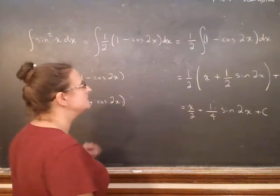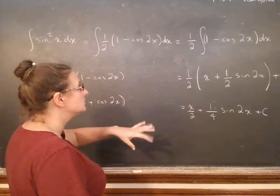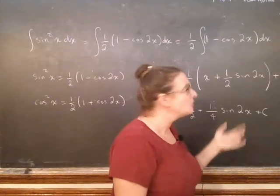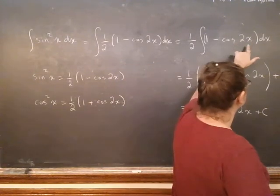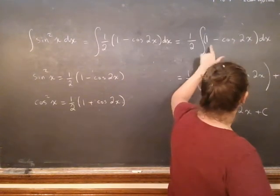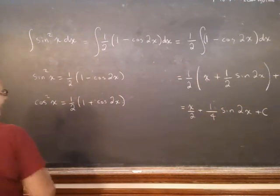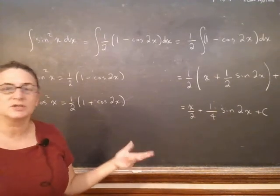So in the end, my answer is this. You do have to remember that if you're making a u-substitution for the 2x, you also have to account for the coefficient. So just watch that. But this is an easy example—it's just sine squared.